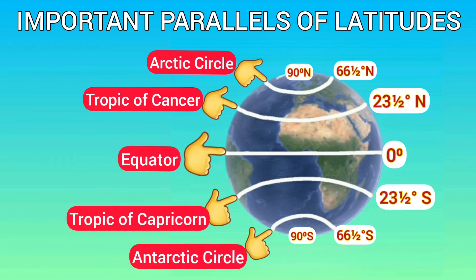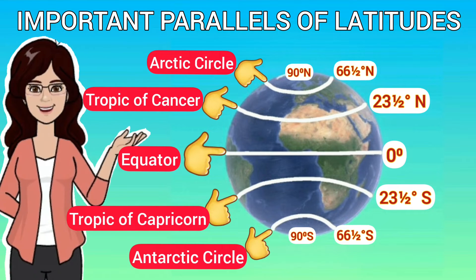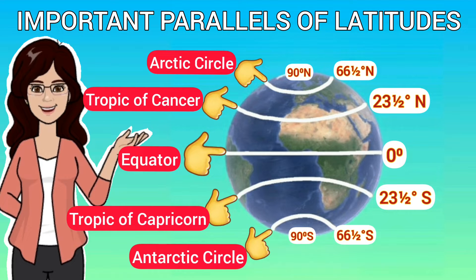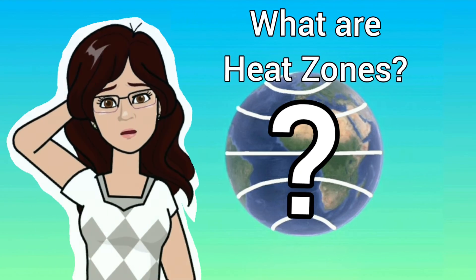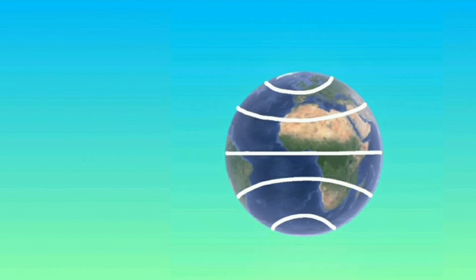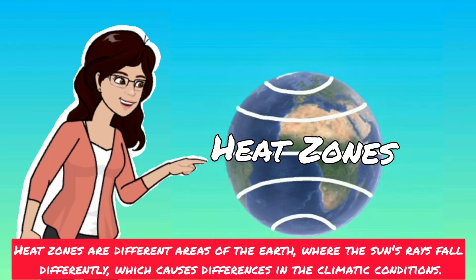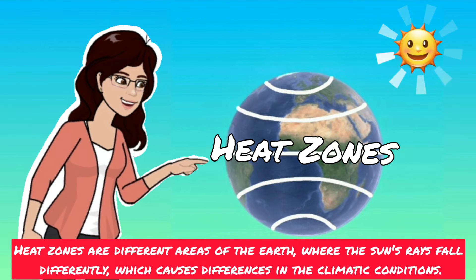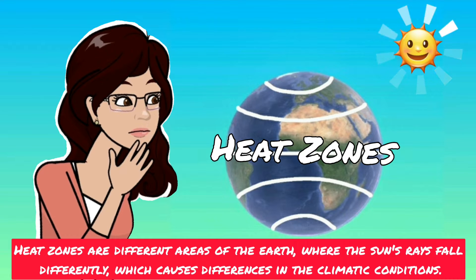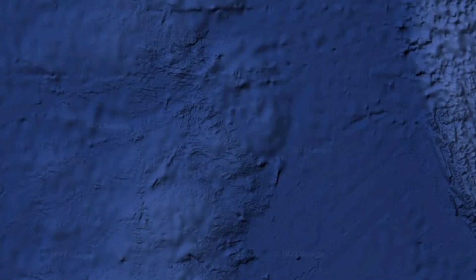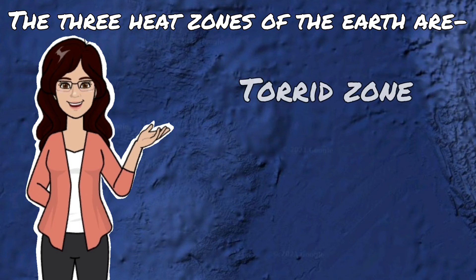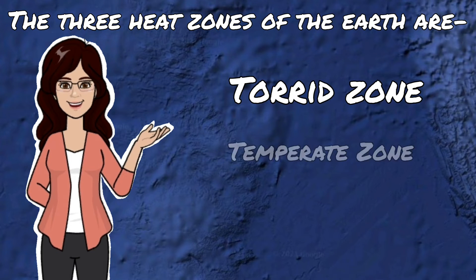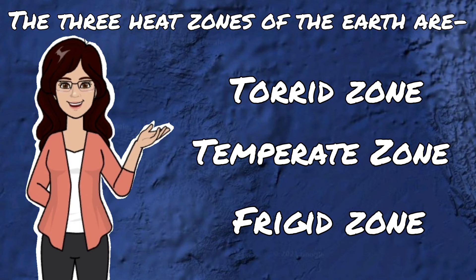There is something very interesting about these latitudes — they divide the earth into three heat zones. Heat zones are different areas of the earth where the sun's rays fall differently, which causes differences in the climatic conditions. The three heat zones of the earth are the Torrid Zone, the Temperate Zone, and the Frigid Zone.